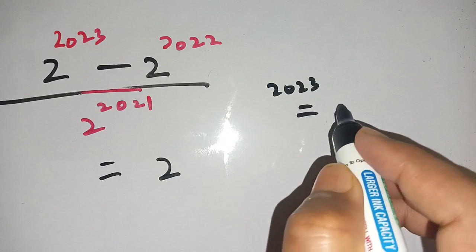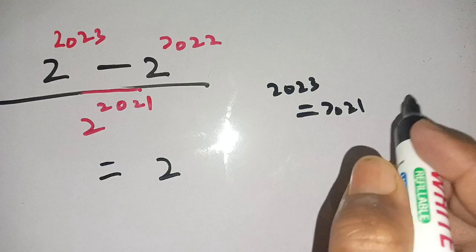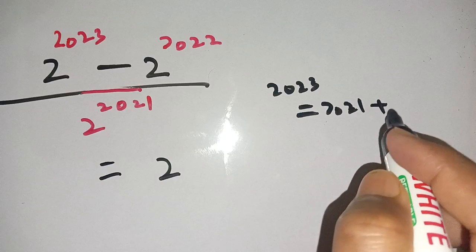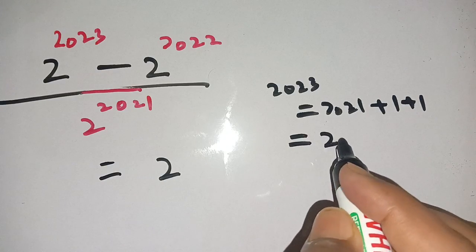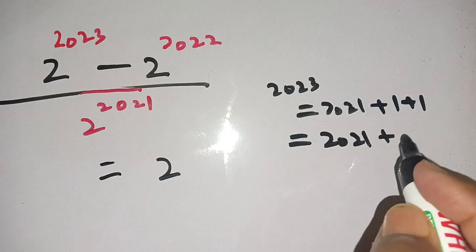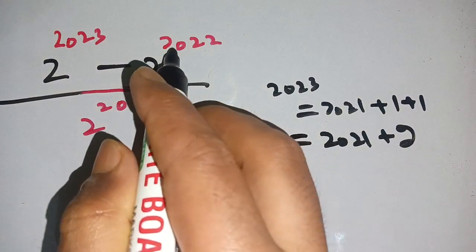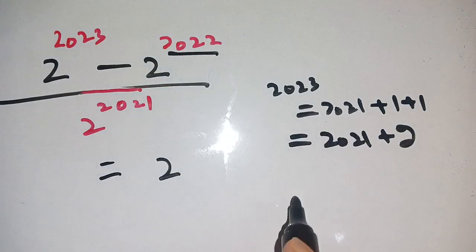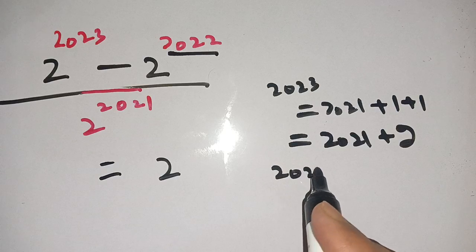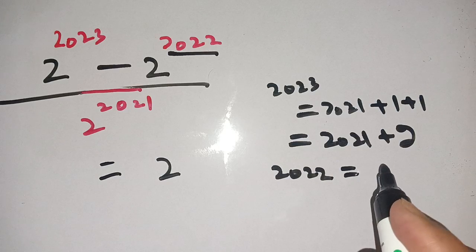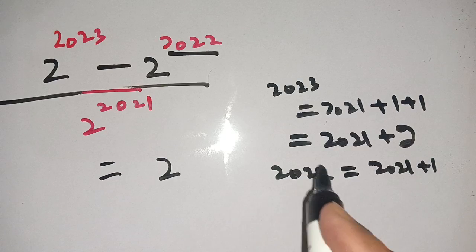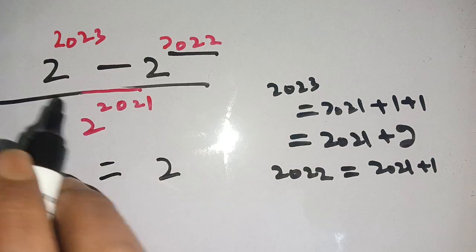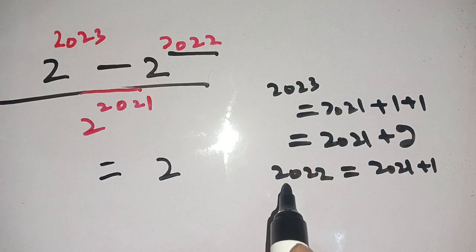We can write 2023 as 2021 plus 2 (since 2021 plus 1 plus 1 equals 2021 plus 2), and 2022 can be written as 2021 plus 1. Now on substituting the values of 2023 and 2022 we get: